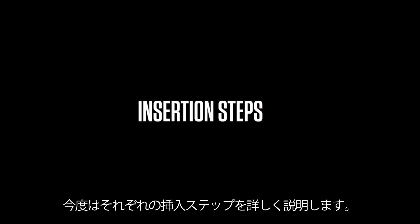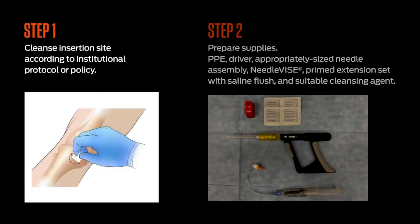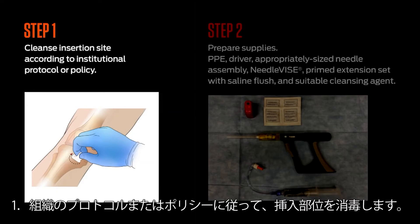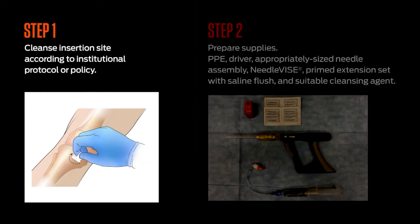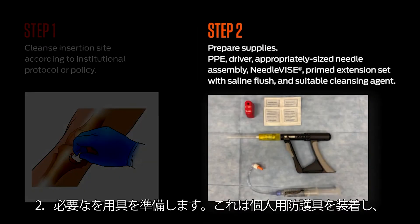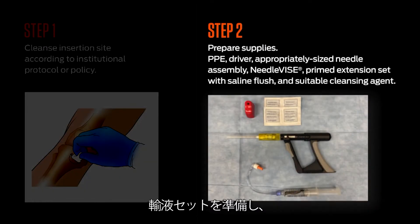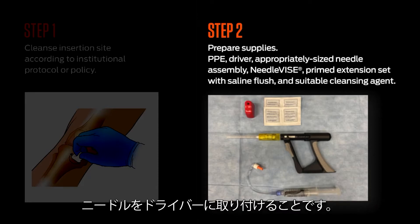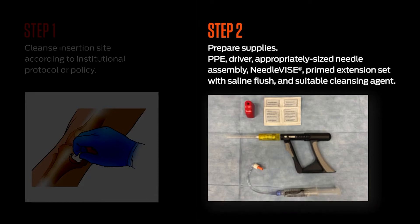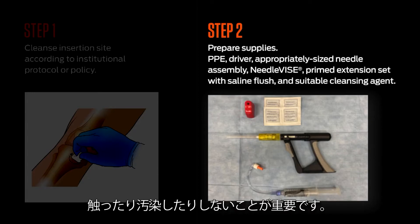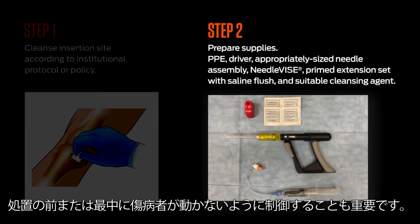Now let's discuss each insertion step in detail. Step 1: Clean the insertion site according to institutional protocol or policy. Step 2: Prepare supplies — don PPE, prime your infusion set, and attach the needle assembly to the driver. It's important not to touch or contaminate the uncapped sterile components of the needle assembly. It's also important to control any patient movement prior to or during the procedure.